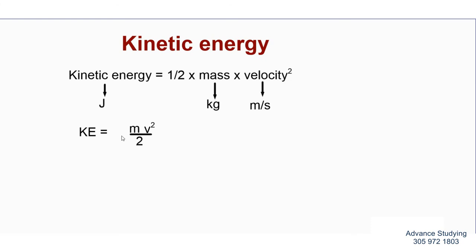I can solve for different variables based on this equation. If the question asks me to solve for mass, I will leave mass alone, bring the 2 up, and divide by velocity squared. So the equation becomes: mass equals 2 times kinetic energy divided by velocity squared.